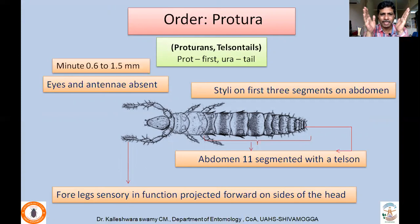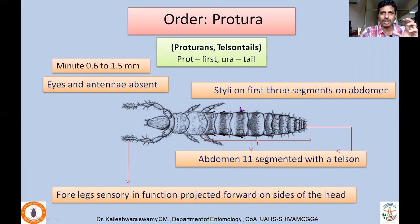The abdomen is 11-segmented with a terminal tail-like structure called the telson. Out of these 11 segments, styli or finger-like processes are found on the first three abdominal segments, mainly meant for locomotion. So in addition to the thoracic legs, they also possess these finger-like processes called styli on the first three abdominal segments which are helpful in locomotion.